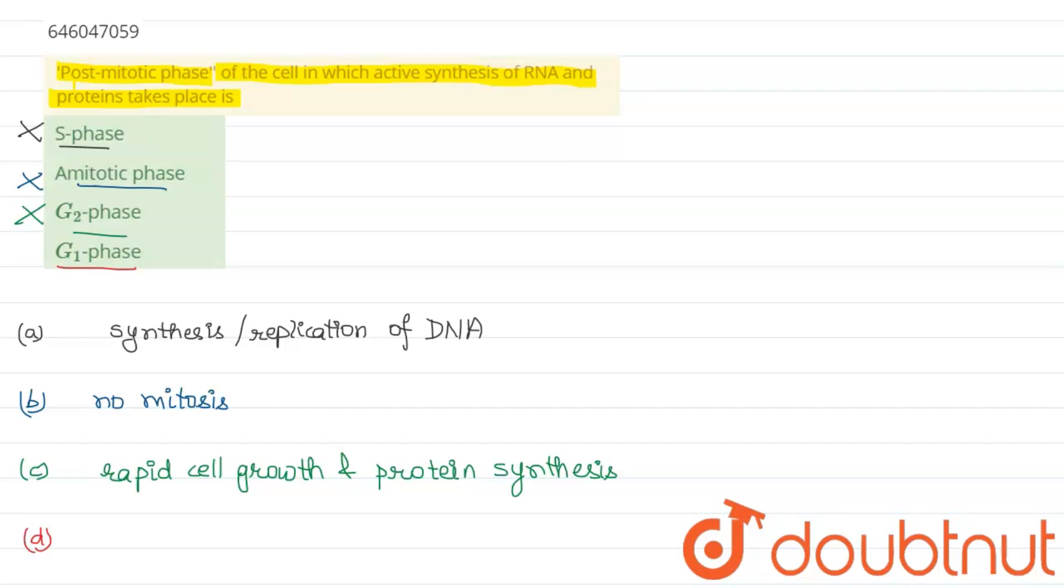So the cell synthesizes mRNA and proteins for the subsequent steps to occur leading to mitosis. So this option is correct.